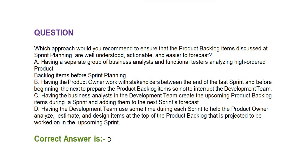The question is: which approach would you recommend to ensure that the product backlog items discussed at the sprint planning are well understood, actionable, and easier to forecast? Option A: having a separate group of business analysts and functional testers analyzing high-order product backlog items before sprint planning. Option B: having the product owner work with the stakeholders between the end of the last sprint and before beginning the next to prepare the product backlog items so as not to interrupt the development team.